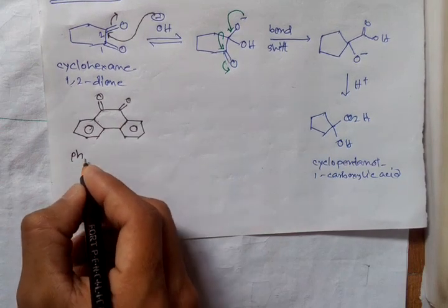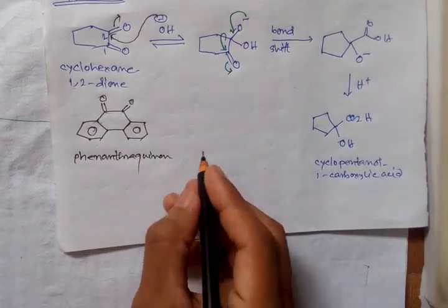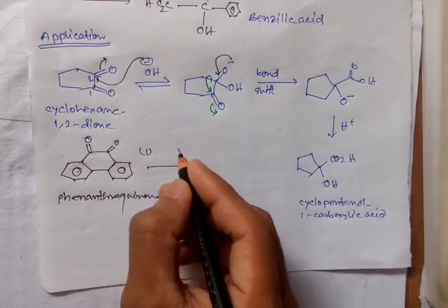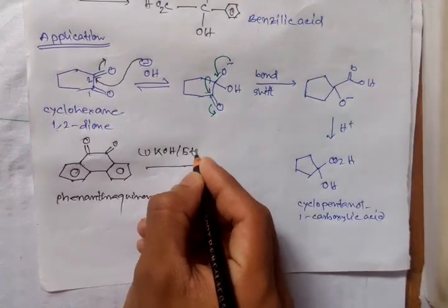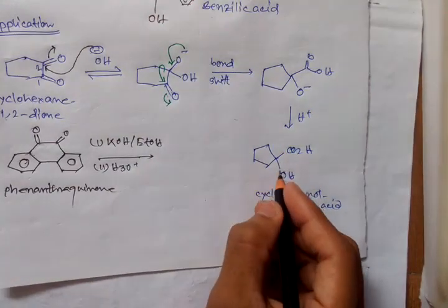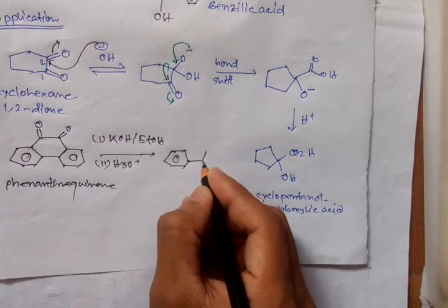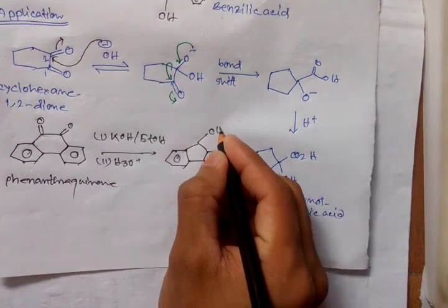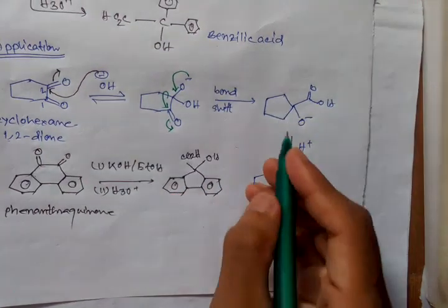Another example is phenanthraquinone. Phenanthraquinone undergoes benzyl benzylic acid rearrangement — treatment with potassium hydroxide in ethanol followed by hydrolysis — via a similar mechanism to form a product with OH and CO2H. Here also it is a ring contraction product.